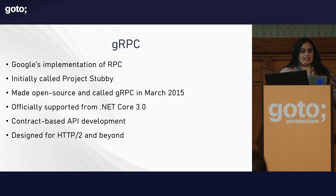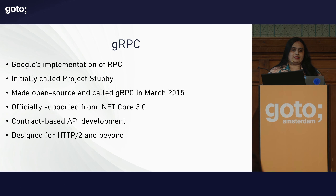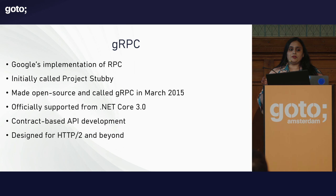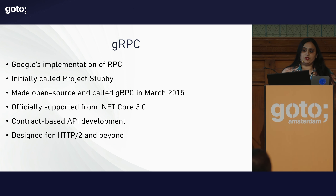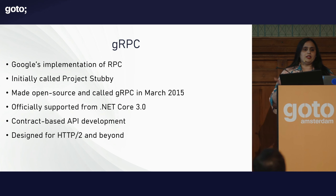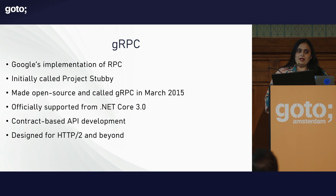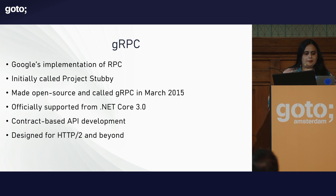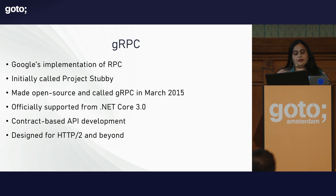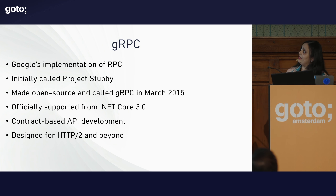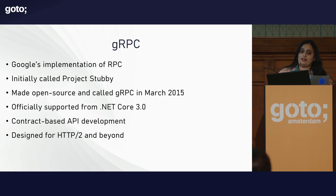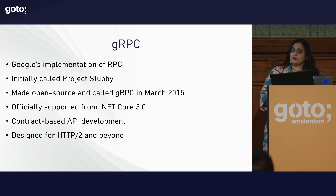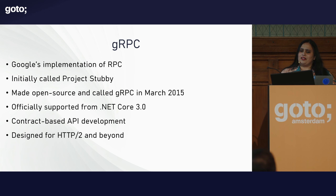With .NET, we started getting official support for gRPC from .NET Core 3.0 onwards. If you are looking at remote procedure call requirements for your project in modern .NET, this is the way to go. We had WCF in the past, which was .NET Framework, and there is Core WCF which is community-supported. But if you are after something more officially supported, gRPC is the way to go. gRPC favors contract-based API development and is designed for HTTP/2 and beyond.